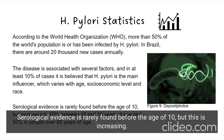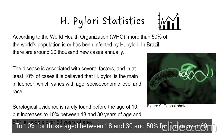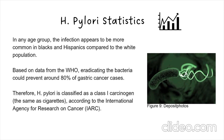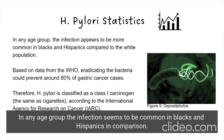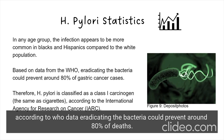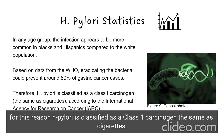Serological evidence is rarely found before the age of 10, but this is increasing to 10% for those aged between 18 and 30, and 50% for those over 60. In any age group, the infection seems to be more common in Blacks and Hispanics in comparison with the white population. According to WHO data, eradicating the bacteria could prevent around 80% of deaths from cases of gastric cancer. For this reason, H. pylori is classified as a class 1 carcinogen, the same as cigarettes, according to the International Agency for Research on Cancer.